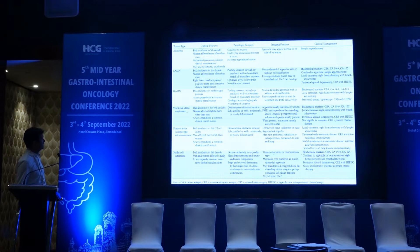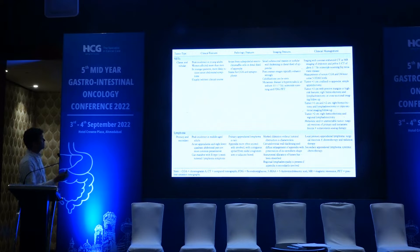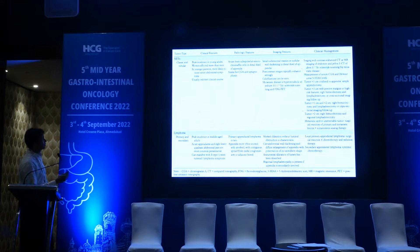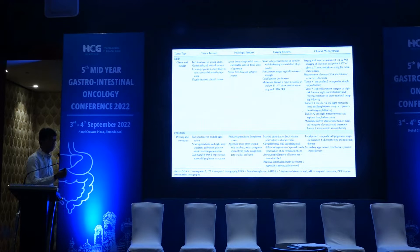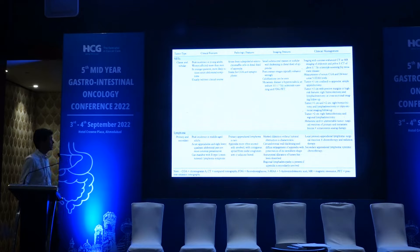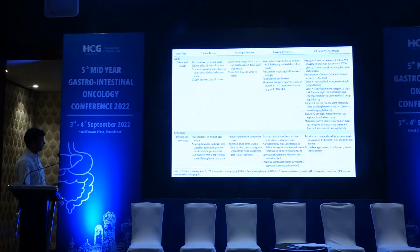According to the size criteria and distribution, most of the time NETs look like a small submucosal mass within the tip of the appendix. Sometimes around the lesion you may find calcification and mesenteric puckering.